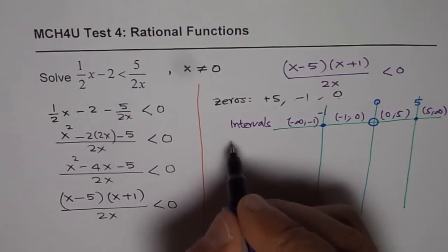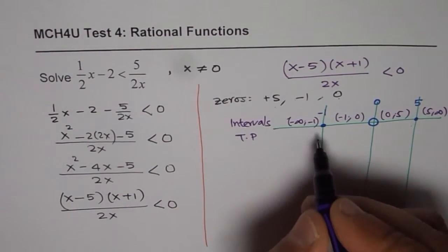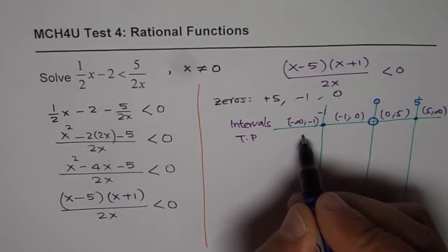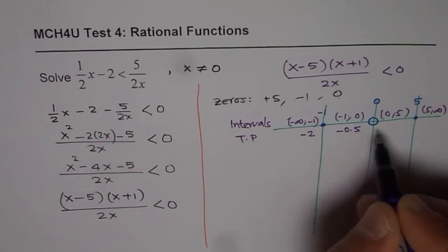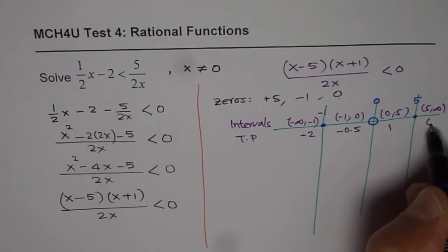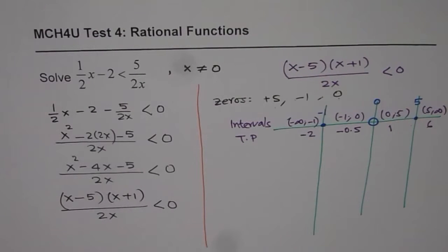Now, within these intervals, let's take some test points. On the left side of minus 1, minus 2 could be a test point. Here, minus 0.5. In this case, 1 and 6 could be a good test point to take.